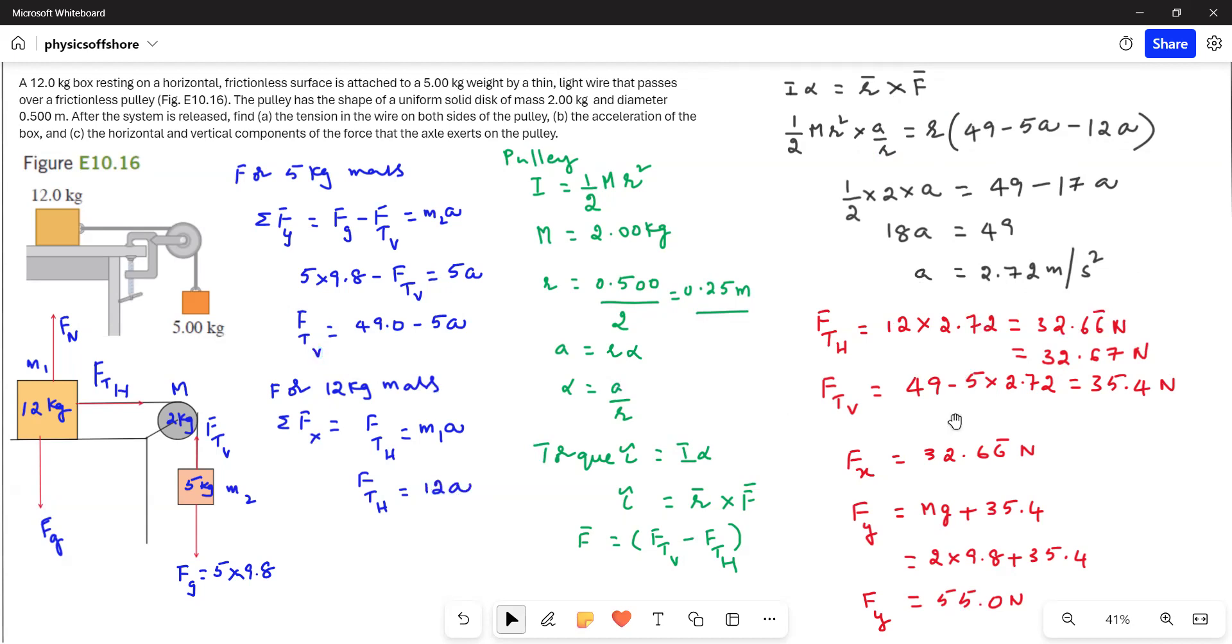Next, for the vertical tension, again you have to substitute a equals 2.72 in the equation 49 minus 5a. So we get the vertical tension as 35.4 newtons.